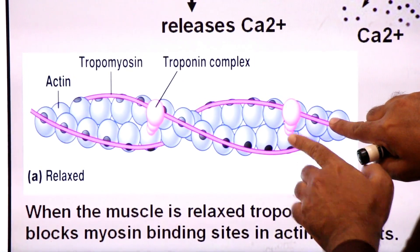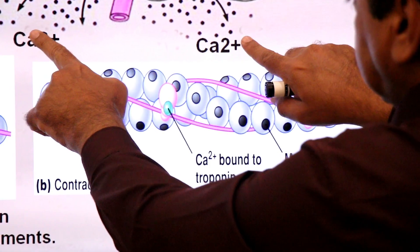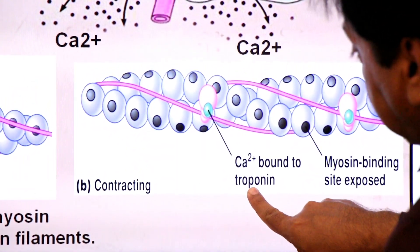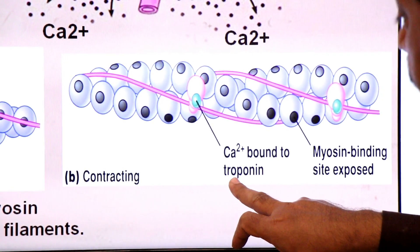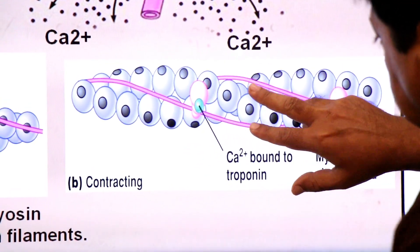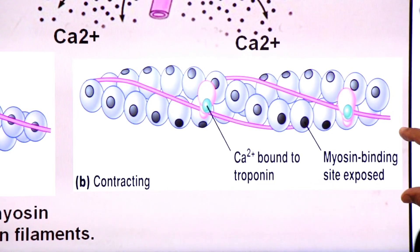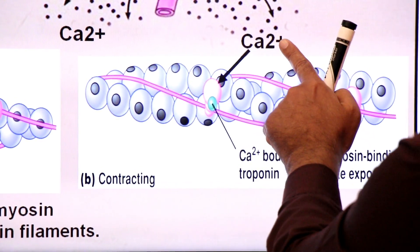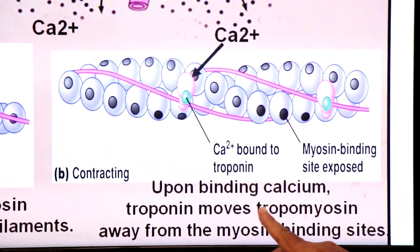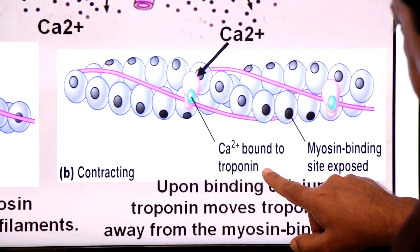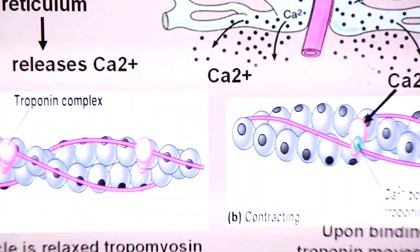When the binding sites are exposed, the myosin head can form cross bridges. The calcium ions play the important role here: calcium ions bind to the regulatory protein troponin. When calcium ions bind to troponin, troponin moves tropomyosin away from its position on the binding sites, clearing the myosin binding sites so cross bridges can form.